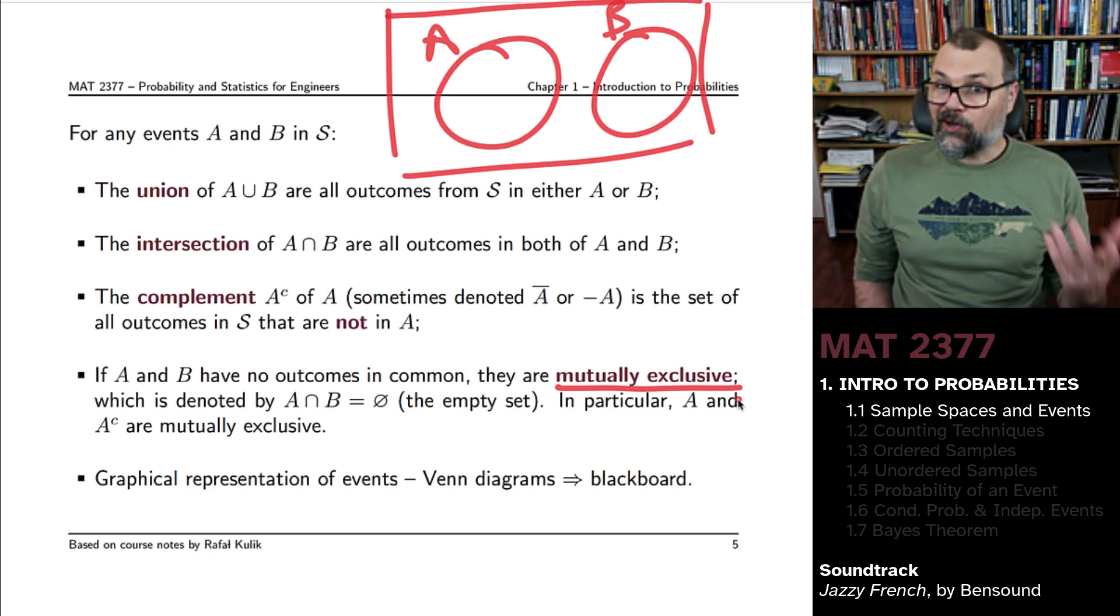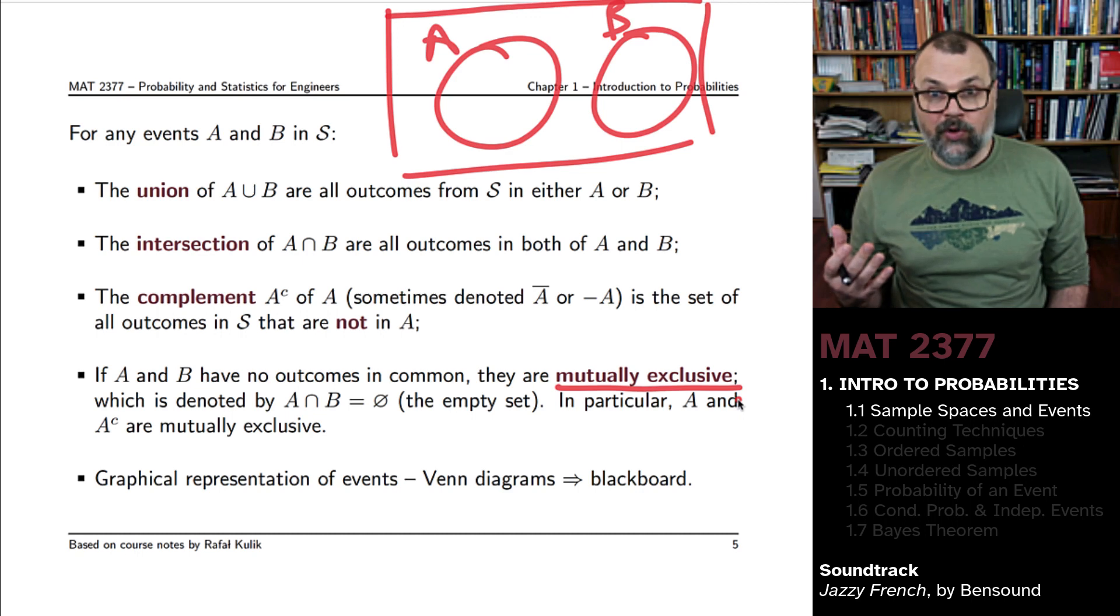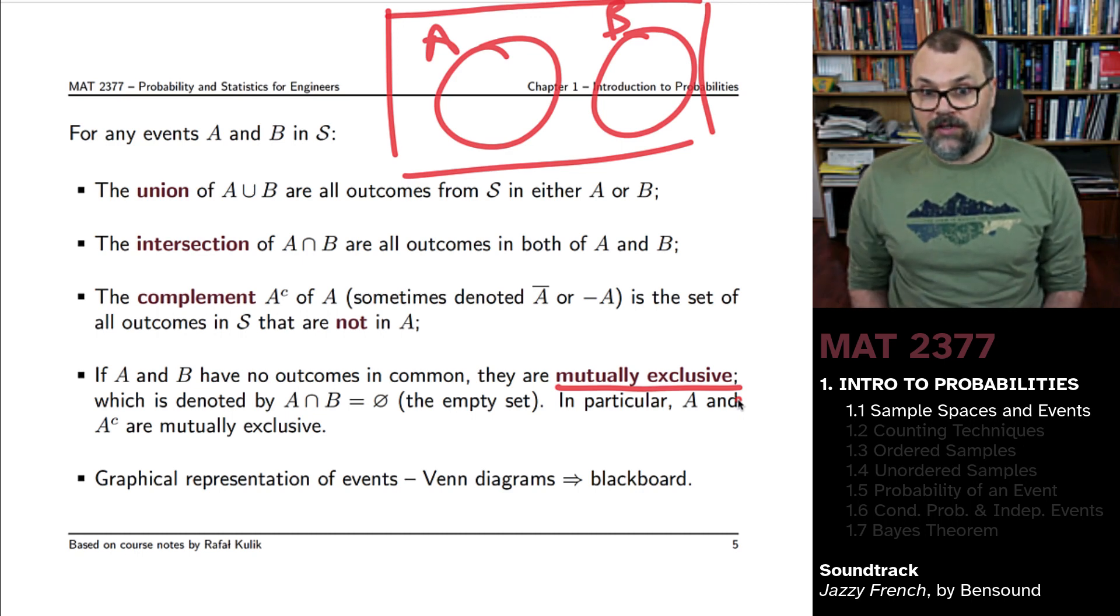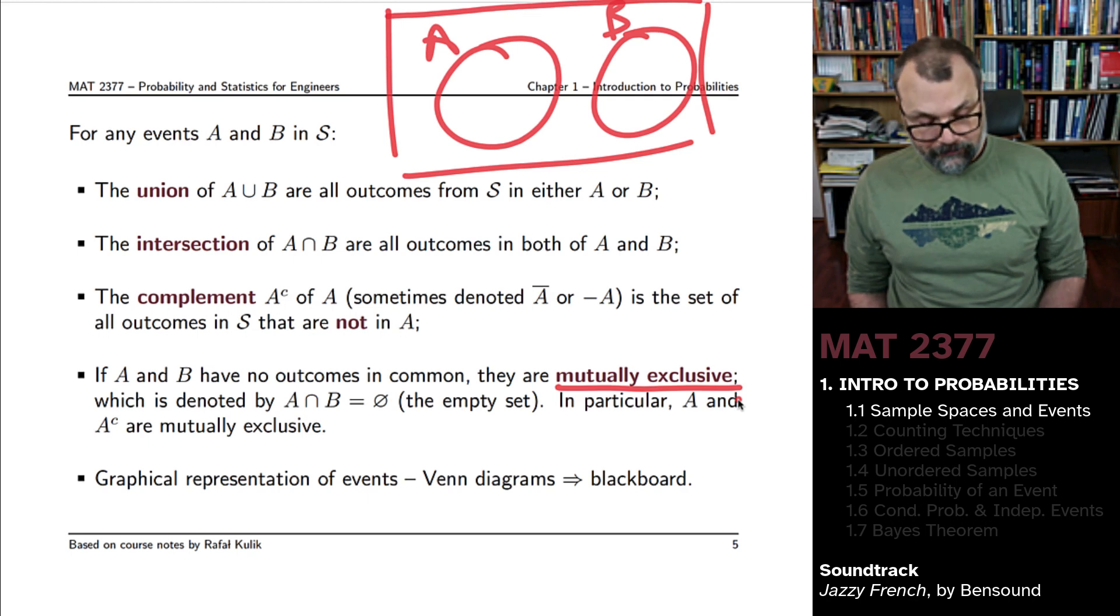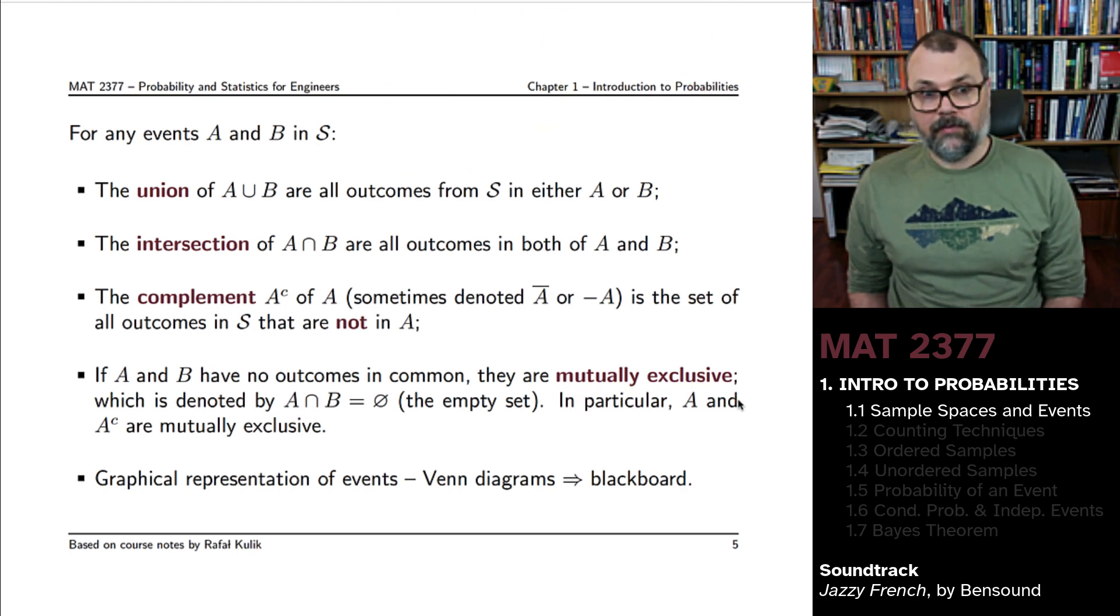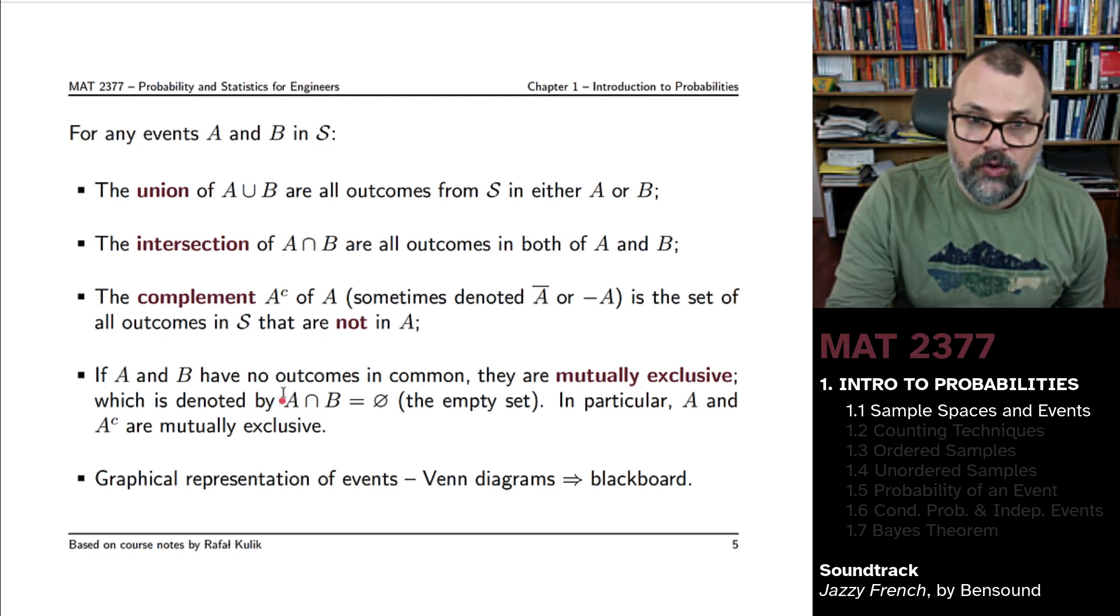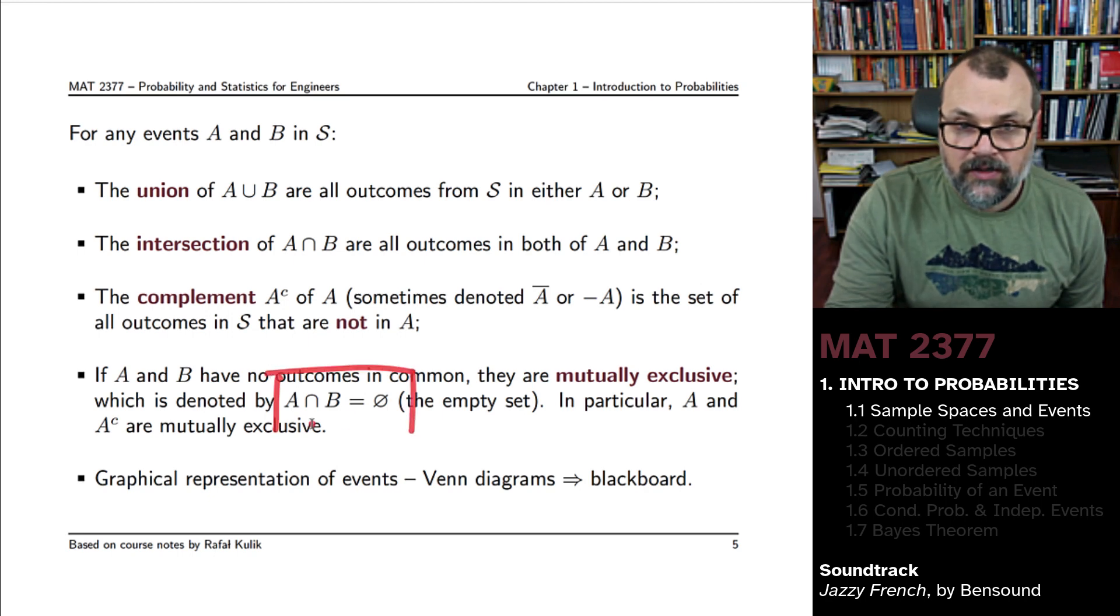One of them can occur, or the other one can occur, but it's impossible for both of these to occur. Important here to remember the property or the definition of mutually exclusive event.